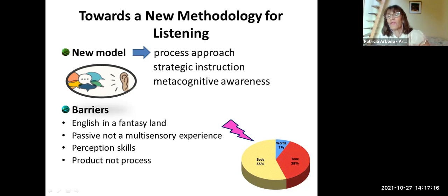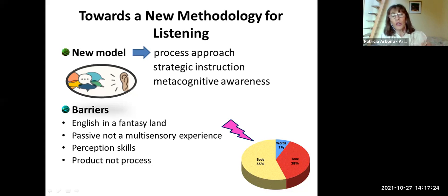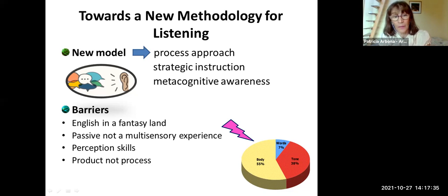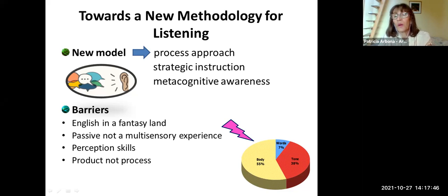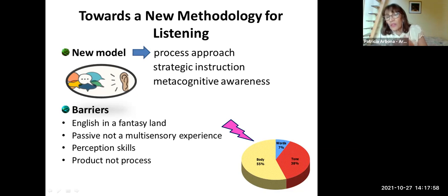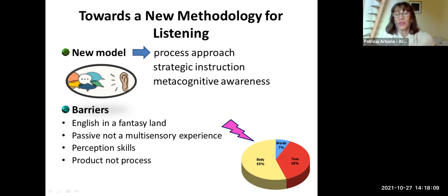So at the moment, students are missing very important information that can help them interpret what is being said. In order to become a multi-sensory experience, the students need to use perceptive skills — perception is the sensory experience they have of the world. The focus should be on the process, not on the product or the outcome, because we never know how the students arrive at a particular answer — normally it is a question of guessing.